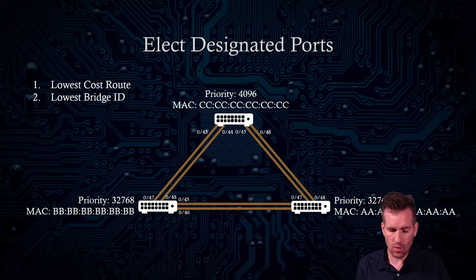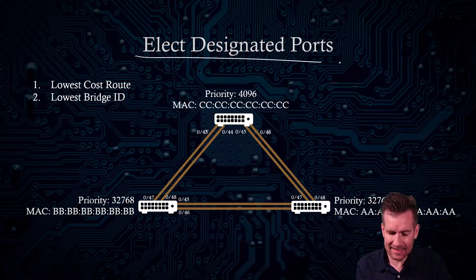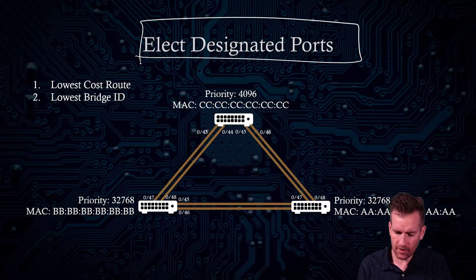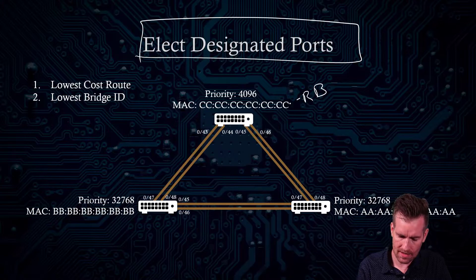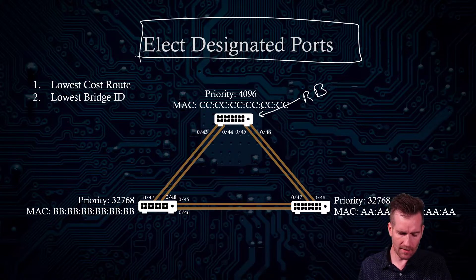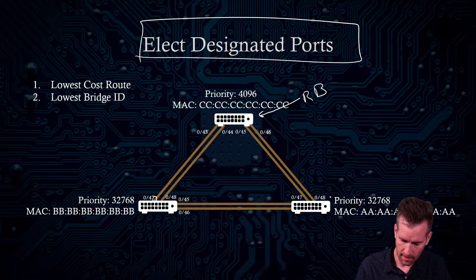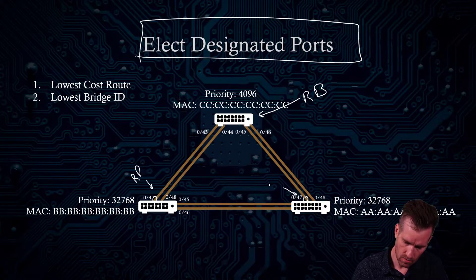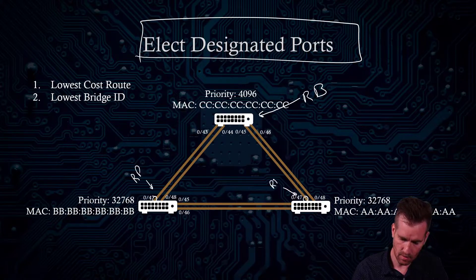The next step is to elect designated ports. After we've figured out what the root bridge is — which in this network is switch one — and after we've elected root ports — switch two has its root port and switch three has its root port — we need to figure out what the designated ports are.